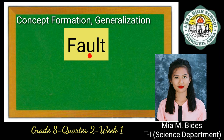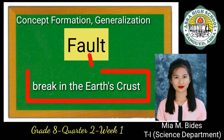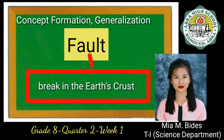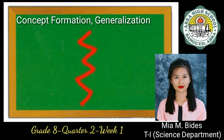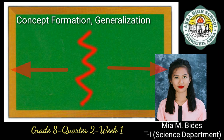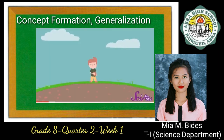Let's sum it up. A fault is a break in the Earth's crust, and along the break, significant movement has taken place. Its movement can be described along the fault in the horizontal direction — that is, the ground moves sideways. Let's watch this short video for you to understand it better.